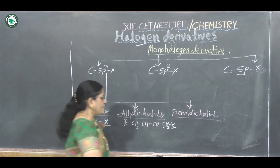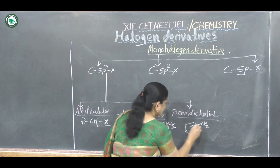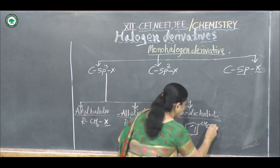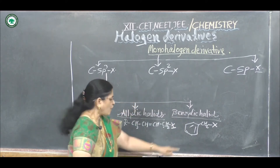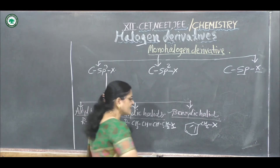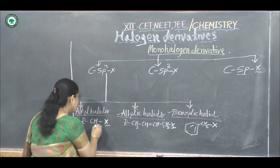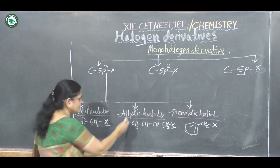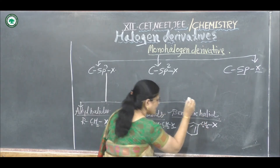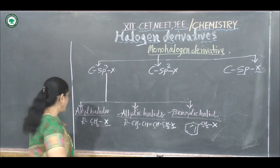Benzylic halides: suppose this is a benzyl group, C6H5CH2. The halogen atom is bonded to the carbon atom of this benzyl group, hence it is called a benzylic halide. This carbon atom is also an sp3 type of hybridized carbon atom, just like alkyl halides and allylic halides.